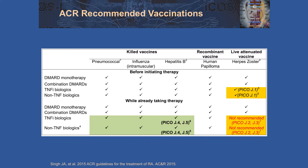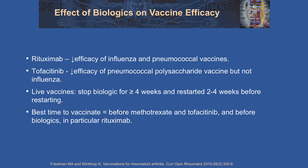Moving on to vaccinations: killed vaccines like pneumococcal, influenza, and hepatitis B can be given in the setting of DMARDs or biologics, while live vaccines like the herpes zoster vaccine — Zostavax — are contraindicated in the setting of biologics and should be given prior to starting biologics. With rituximab, there is decreased efficacy of influenza and pneumococcal vaccines; if possible, wait as long after the last rituximab infusion as possible before administering vaccines. With tofacitinib, there's decreased efficacy of the pneumococcal vaccine but not influenza. If you need to administer a live vaccine, biologics should be held for four weeks and resumed two to four weeks after administering the vaccine.